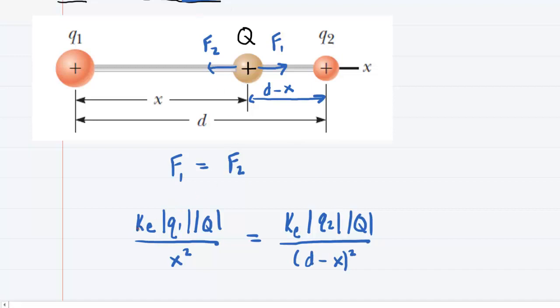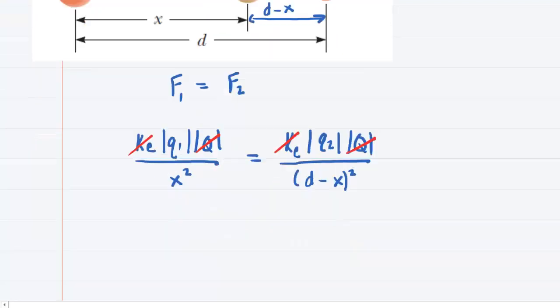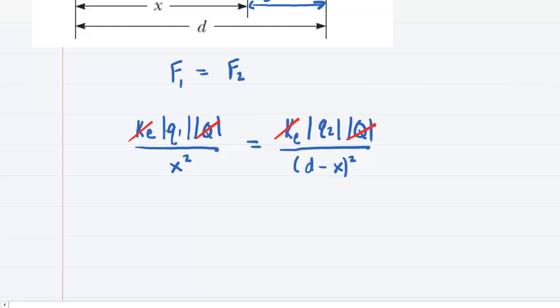Now we can simplify this equation because we can cancel out the k's on this side, as well as the q's on this side. So we'll rewrite the equation in a much simpler form. Remember that q1 was positive, so we don't need the absolute value symbols anymore. We'll just say q1 over x squared, and this will equal q2 over d minus x squared.